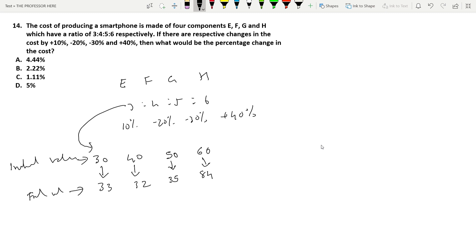So all you have to do is add these four numbers and find the difference and find the percentage change. 30 plus 40 is 70, 120, 180. And after change it becomes 33 plus 32, 65, 100, 184. So the question is to find the percentage change in cost which is 184 minus 180 divided by initial cost which is 180 into 100, which become 4 by 180 into 100. 0, 40 by 80, so divide by 18 it becomes 1 and this will become 2, point remainder is 4, it becomes 2.